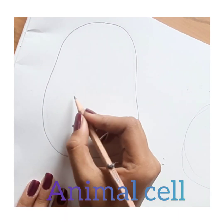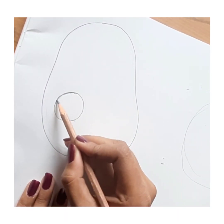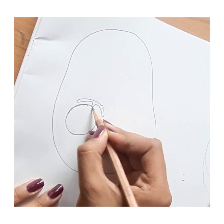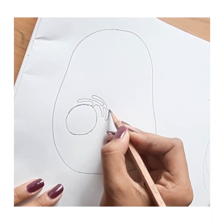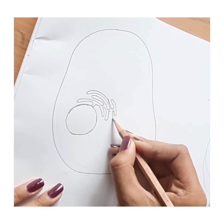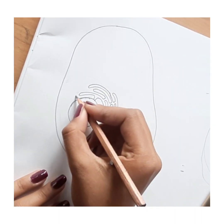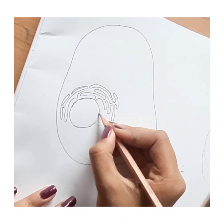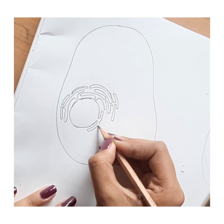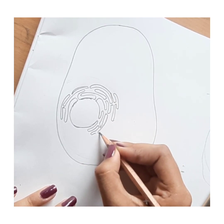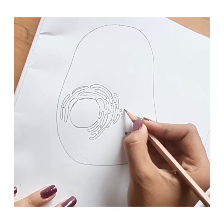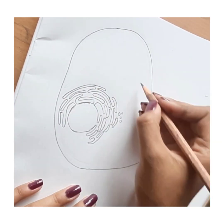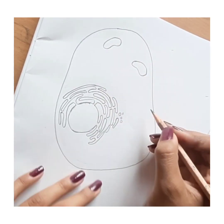Starting with the border nucleus, here is the endoplasmic reticulum, and these are mitochondria.